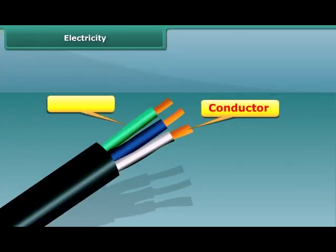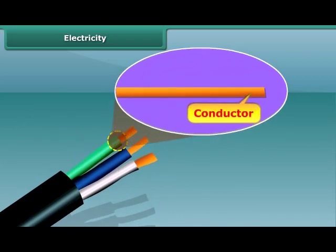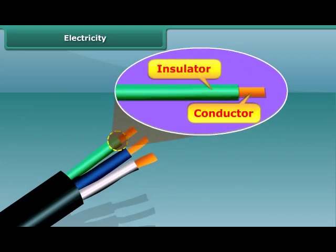Both conductors and insulators are important while using electricity. The conductors like copper or other metallic wires are used for electric supply, but at the same time, these metallic wires are coated by insulating materials like plastic or rubber for safety.